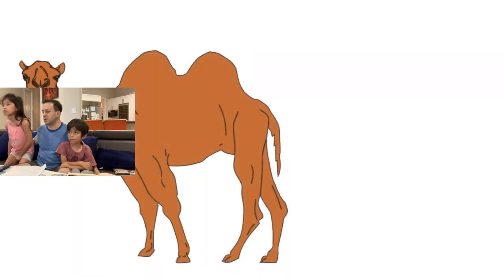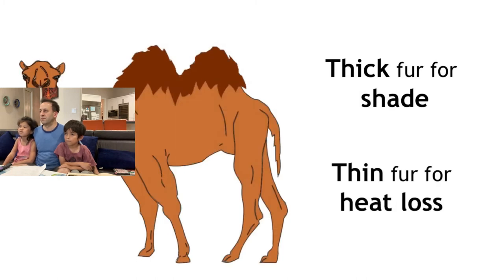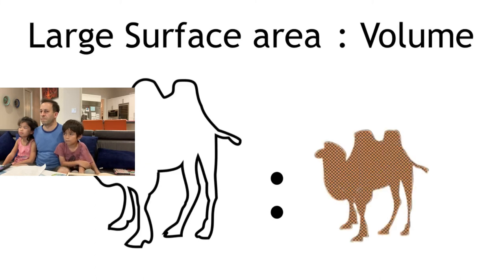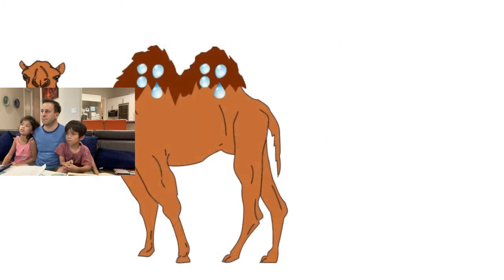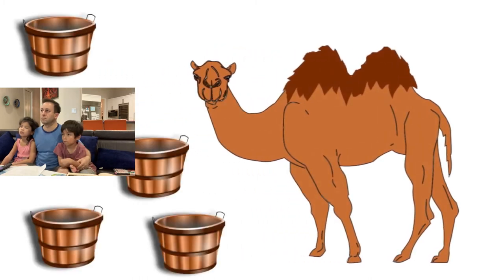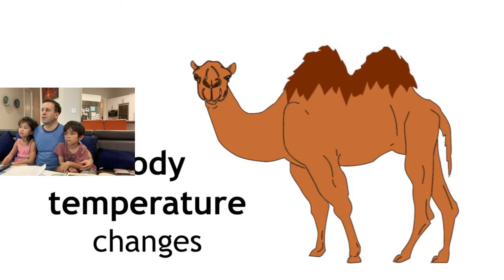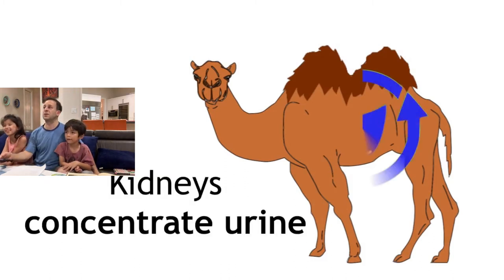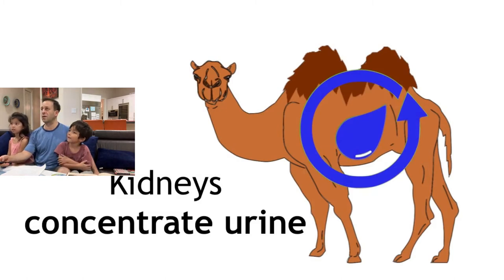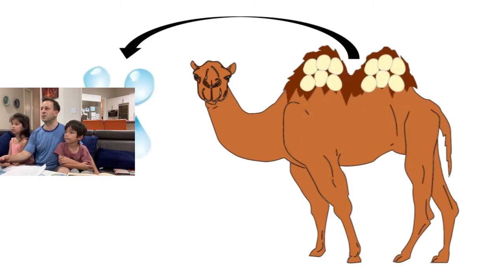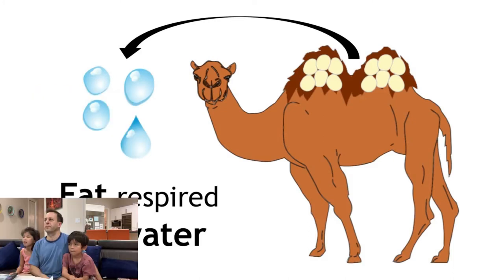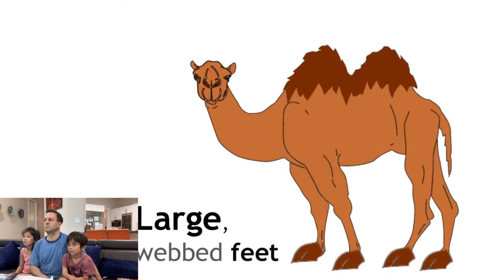Camels are very well adapted to live in the desert, which is hot and dry during the day but cold at night. They have adapted thick fur on the top of their body for shade, but thin fur everywhere else to maximize heat loss. A large surface area to volume ratio also helps keep them cool. Camels can tolerate body temperatures of up to 42 degrees Celsius. It's a myth that camels store water in their humps, but they can go a very long time without drinking and can drink up to 46 litres in one session. They lose very little water through perspiration because their body temperature changes throughout the day. Their kidneys concentrate urine, reducing water loss. Their hump is a fat store which can be respired to release water, allowing them to go a long time without food. They have very large flat feet to spread their weight on the sand, and the skin between their toes helps stop them sinking. They also have two sets of eyelashes and large slit-like nostrils to keep sand away from their face.